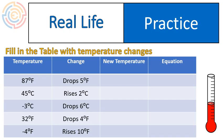So let's take a look. First of all, I'm going to fill in the first example here. If it starts at 87 degrees Fahrenheit, it drops 5 degrees Fahrenheit. The new temperature would be 82 degrees Fahrenheit. My equation would look like this. 87 plus negative 5 is equal to 82.